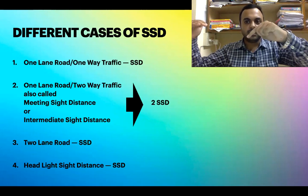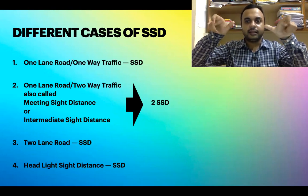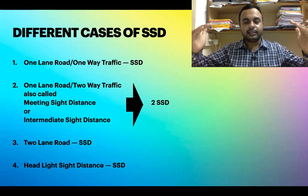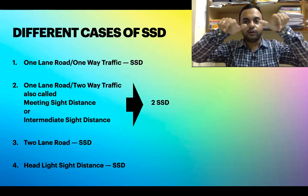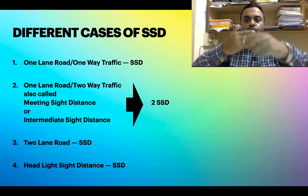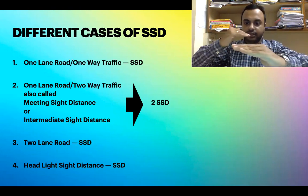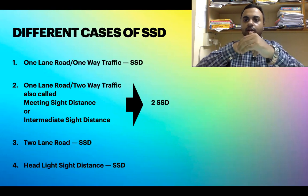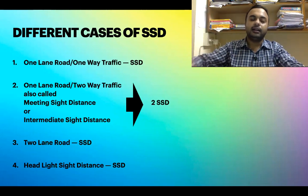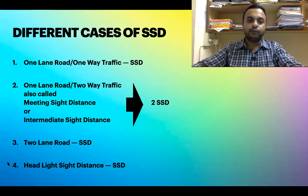Since vehicles approach from both directions on a one-lane two-way road, each vehicle must have its own SSD available. Therefore, the total sight distance required is twice the SSD — both vehicles must be able to see each other. For two-lane two-way roads or multi-lane roads, only one SSD is needed since vehicles can stop without colliding with oncoming traffic.